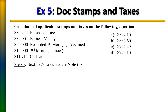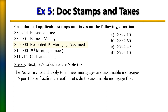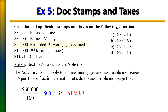Let's start by calculating the note tax for the assumable mortgage, which is $50,000. We divide that by 100, which gives us 500. On the note tax it's 35 cents per 100 or fraction thereof. We take that 500 and multiply it by 35 cents, giving us the note tax for this assumable mortgage.